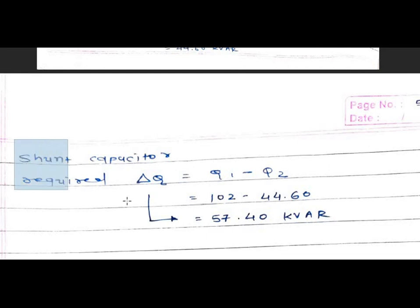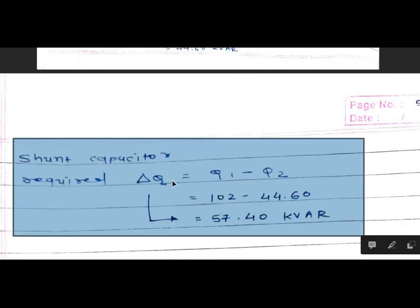The shunt capacitor required, delta Q, for improving the power factor from 0.7 to 0.95 is given by delta Q equals Q1 minus Q2. Q1 is equal to 102 KVAR and Q2 is equal to 44.60 KVAR, so delta Q is equal to 57.40 KVAR. This is the reactive power required to improve the power factor from 0.7 to 0.95. This capacitor value is 57.40 KVAR leading.